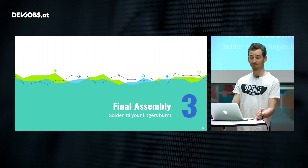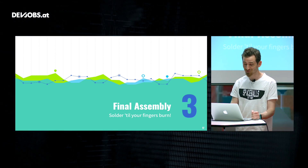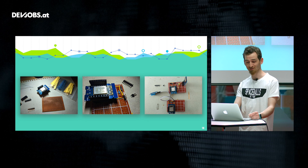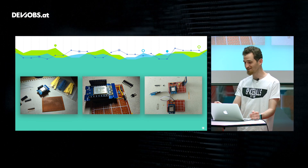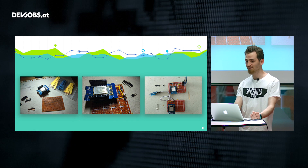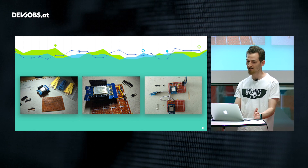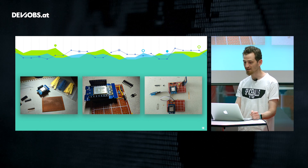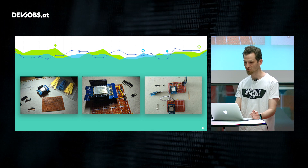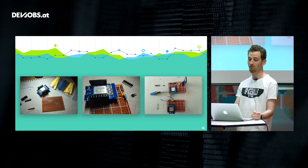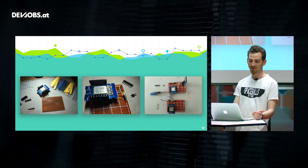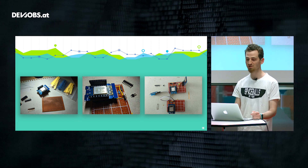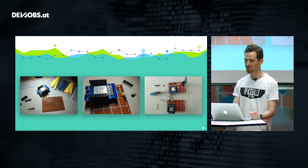Now comes the final assembly — also called 'solder till your fingers burn' — because I had to do a lot of soldering, which is not something I do daily. On the right-hand side you can see how it all came together: the resistors, the pins, and the micro SD shield. Below that is a weather station without the micro SD shield, which is possible because the firmware is quite configurable — you can select which temperature sensors are attached and whether a micro SD card is included.